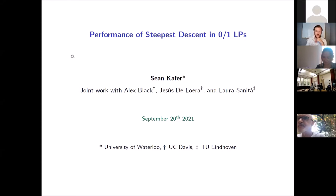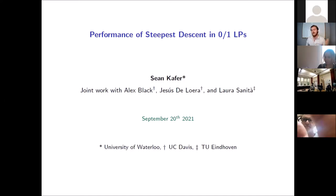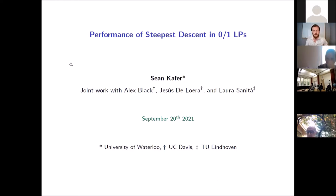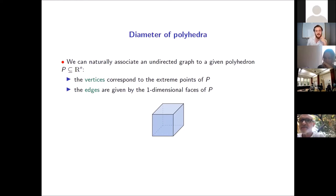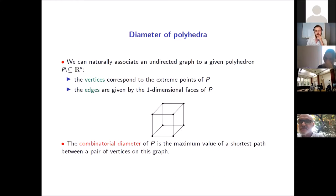This talk is primarily motivated, as a lot of optimization talks are, by hoping to better understand the performance and behavior of the simplex method, particularly in the setting of zero-one LPs. One of the most popular abstractions is to look at the diameter of polyhedra. Given a polyhedron, we naturally associate a graph whose vertices and edges are exactly the vertices and edges of the polyhedron itself, and the combinatorial diameter is the maximum value of a shortest path between any pair of vertices on this graph.